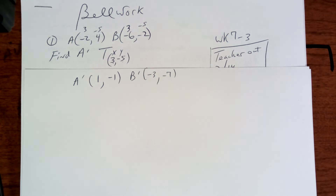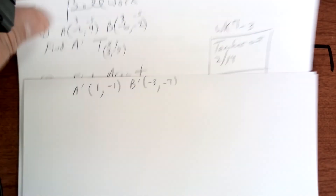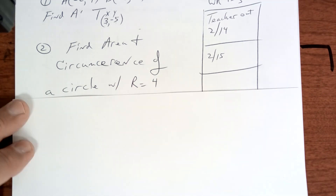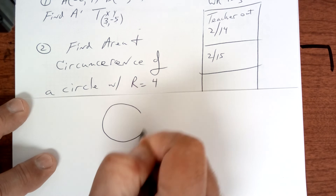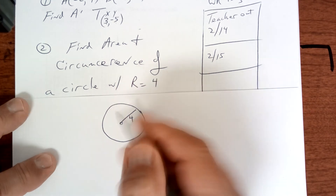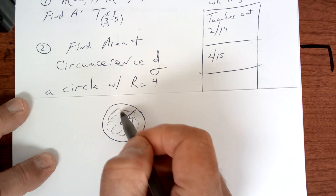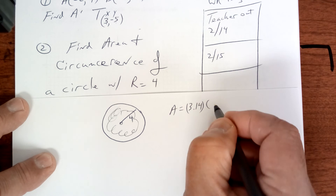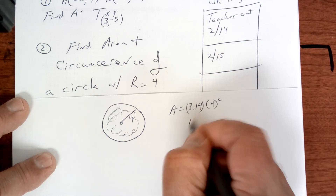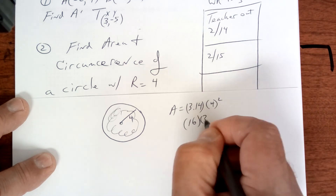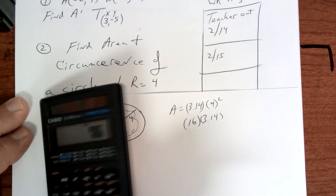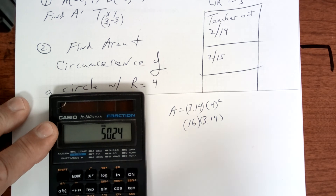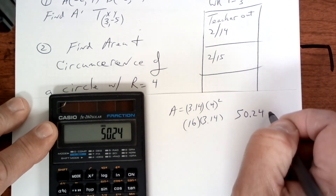Real simple. If you missed a worksheet, it's over here on this table. Find the area and circumference of a circle with radius 4. Draw a circle and mark the radius. The area is the inside, so area equals pi times the radius squared. That's going to be 16 times 3.14, which gives us 50.24 square inches. That's how you do area of a circle.